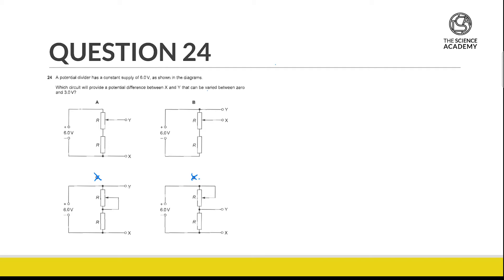If we measure the potential difference between X and Y, you can see that we are always going to get 6 volts for C. And if we measure the PD between X and Y,